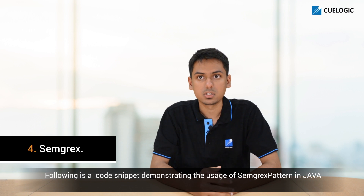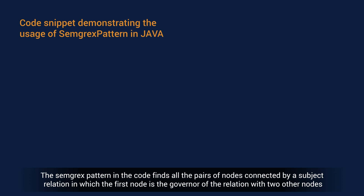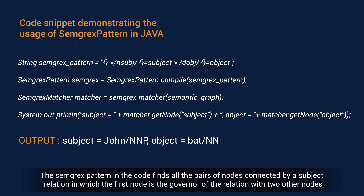Following is a code snippet demonstrating the usage of the Semgrex pattern in Java. The Semgrex pattern in the code finds all the pairs of nodes connected by a subject relation, in which the first node is the governor of the relation with two other nodes — i.e., the subject and a dependency object. Here, we have captured the subject relation and named it 'subject', and also captured the object relation and named it 'object'.